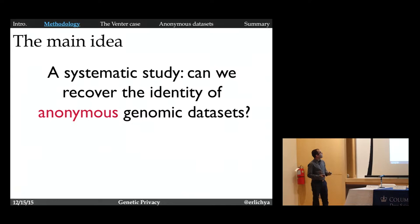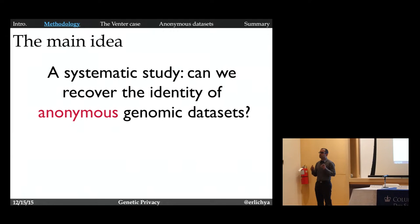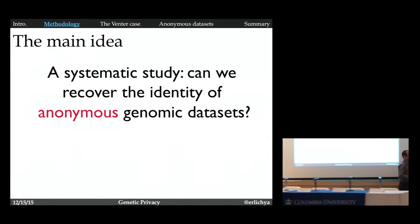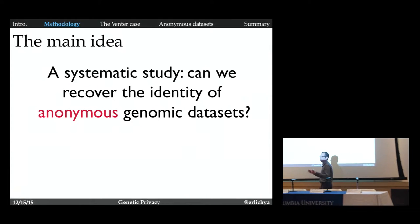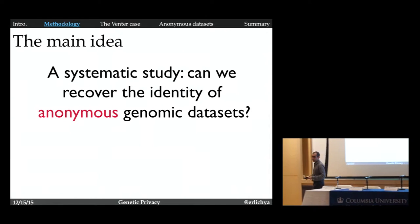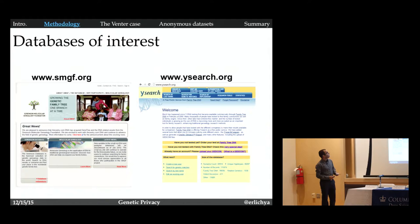The purpose of our study is to conduct a systematic investigation to see if I can use these databases, to use this correlation between the Y chromosome and the surnames, to breach the privacy of whole genome sequencing data that are allegedly anonymous without any identifiers.